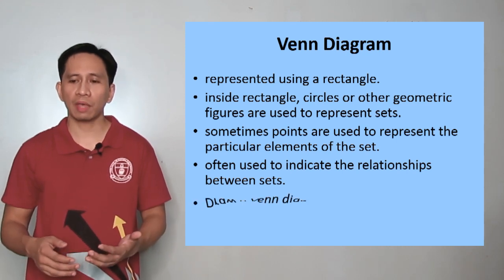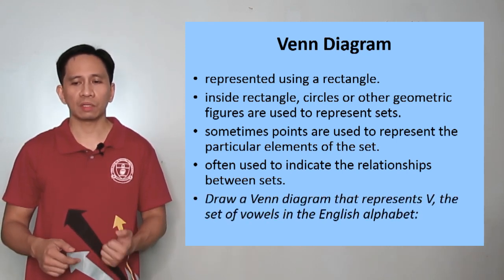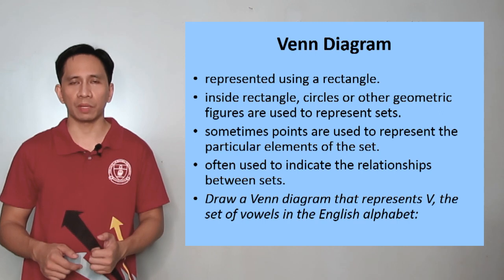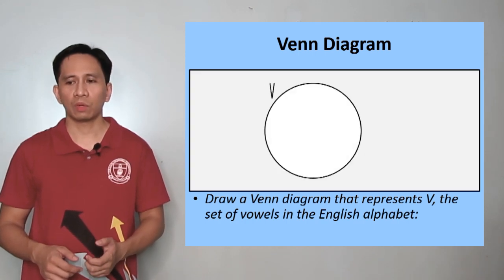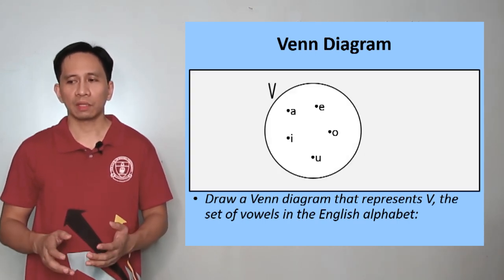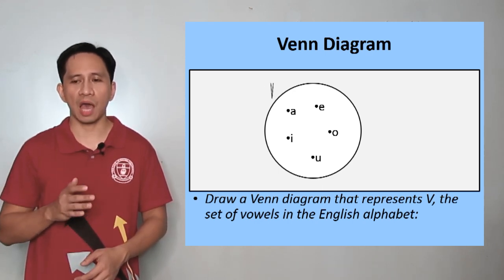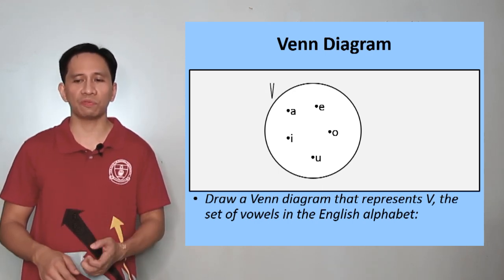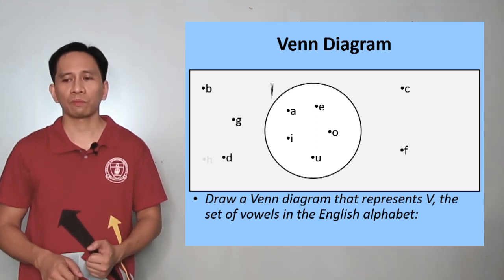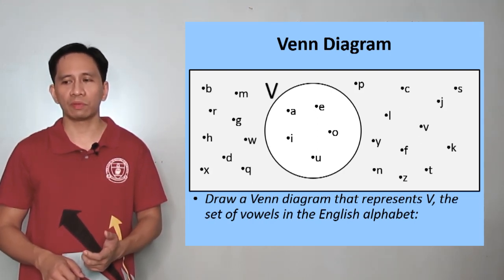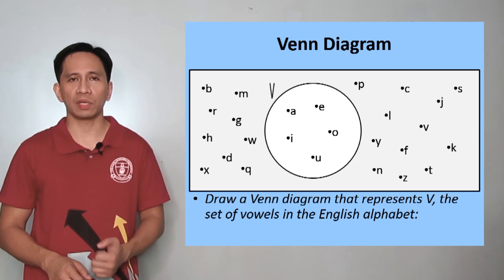Let us now try to draw a Venn diagram that represents V, a set of vowels in the English alphabet. To do this, we have a rectangle. Then inside that, we have a circle which has the elements A, E, I, O, and U which represents V, our set. And outside the circle, we have all the other letters of the English alphabet.